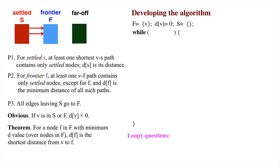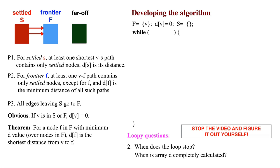We now write the loop. And the second loopy question has to do with the loop condition. When can the loop stop? That is, when do all elements of array d have their final values? Stop the video and figure this out. Then continue.